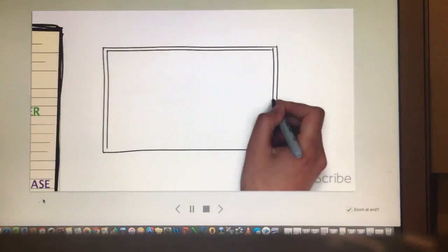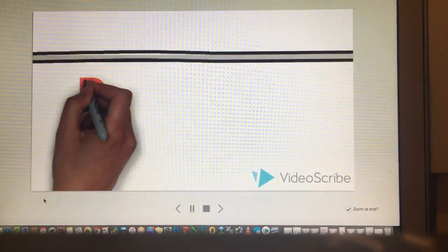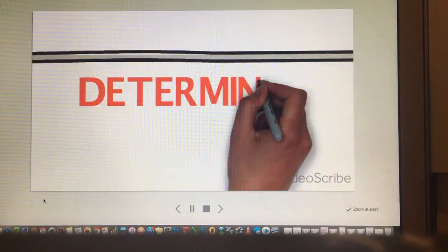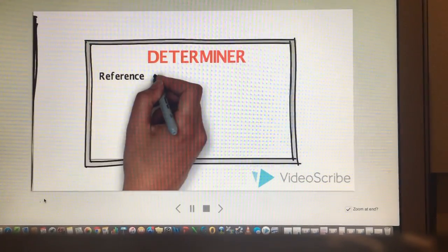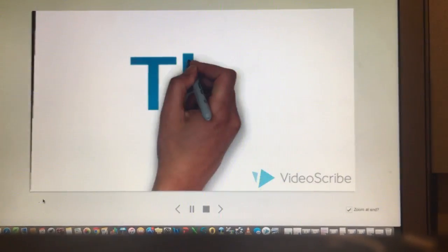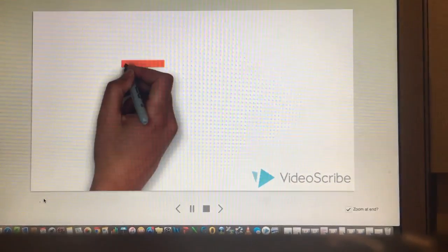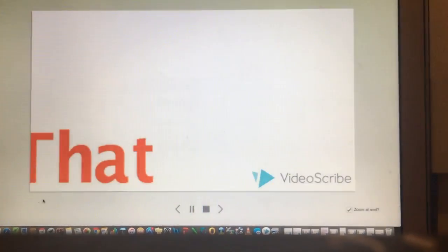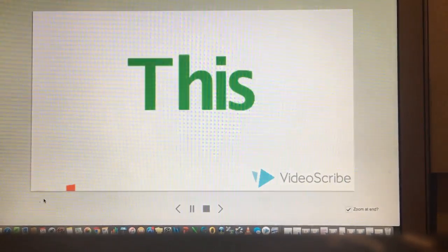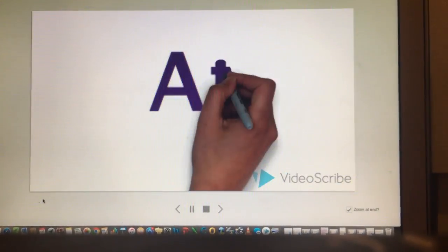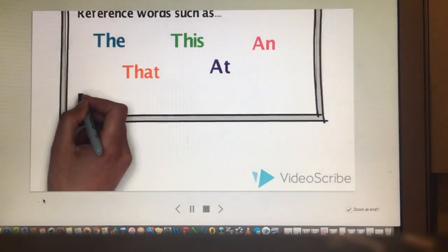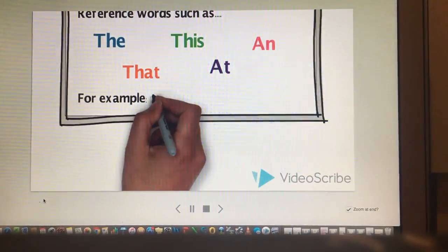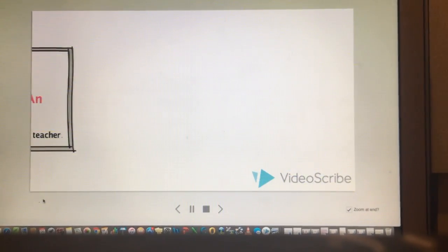First we will be looking at determiners. A determiner is a reference word such as the, that, this, a, and an. Like for example, the student and the teacher.